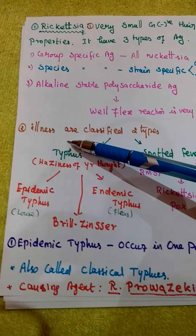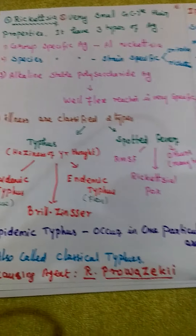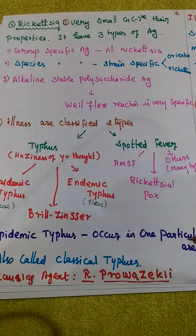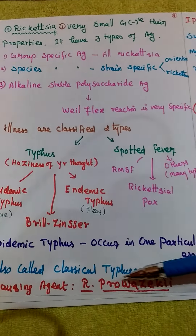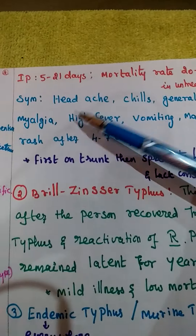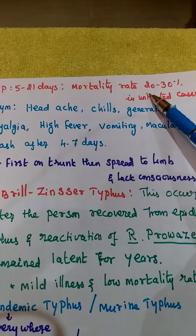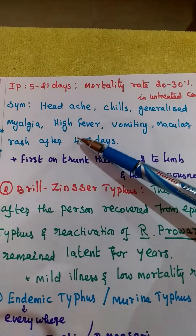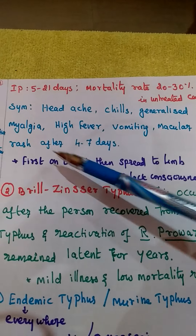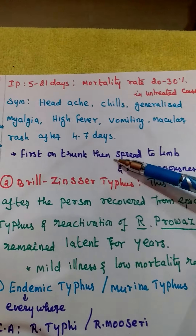Epidemic typhus, also called classical typhus, is caused by Rickettsia prowazekii. The incubation period is 5 to 21 days. Without treatment, the mortality rate is 20 to 30 percent. Symptoms include headache, chills, generalized malaise, high fever, vomiting, and macular rashes appearing after 4 to 7 days. The rash first affects the tongue, then spreads to the limbs. It also affects the mind.